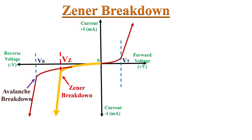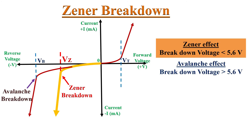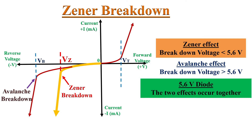For silicon Zener diodes whose breakdown voltage is less than 5.6 volts, the Zener effect is the predominant effect. On the other hand, for Zener diodes where the breakdown voltage is more than 5.6 volts, the avalanche effect is predominant. In a 5.6-volt Zener diode, both effects occur together.